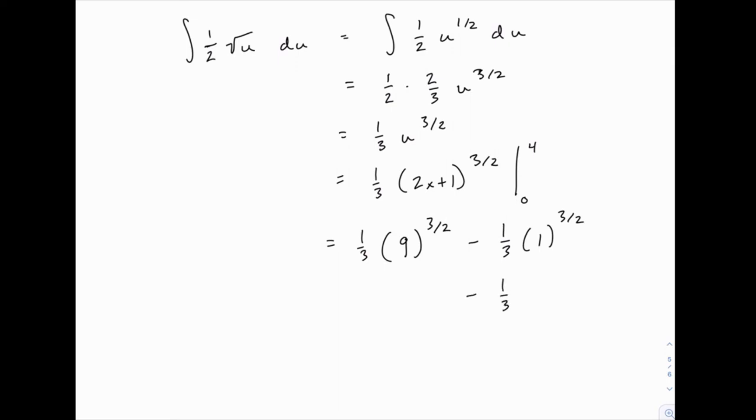When working with nine to the three-halves, remember we want to take the square root and then cube our answer. So we start with the square root of nine, which is three, and then we cube that. And if you cube three, three to the third power, you get 27. So this is going to be one-third times 27. So we get 27 over 3 minus 1 over 3, which is 26 over 3.